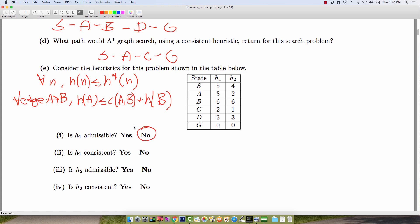What we also know is that any consistent heuristic is admissible. Consistency is a strictly stronger condition. And because of that, if a heuristic is not admissible, it is also not consistent. And so we know immediately that H1 is also not consistent.